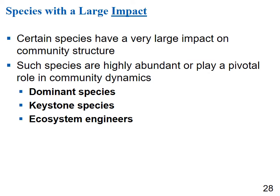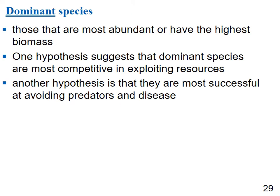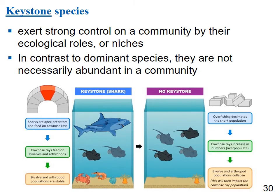Some species have a very large impact on their community — either through high abundance or a pivotal ecological role. These include dominant species, keystone species, and ecosystem engineers. A dominant species is the most abundant or has the largest biomass in an area. Hypotheses suggest they are either the most competitive at exploiting resources or the most successful at avoiding predators and disease — either way, they have a big influence on community structure.